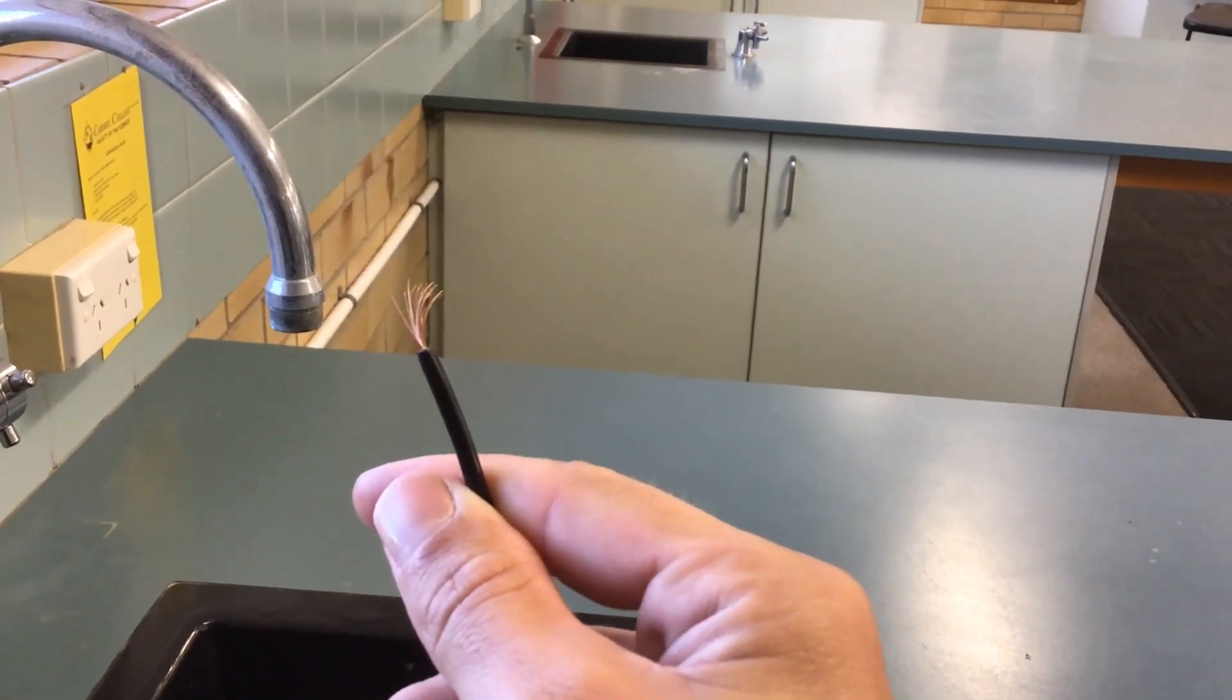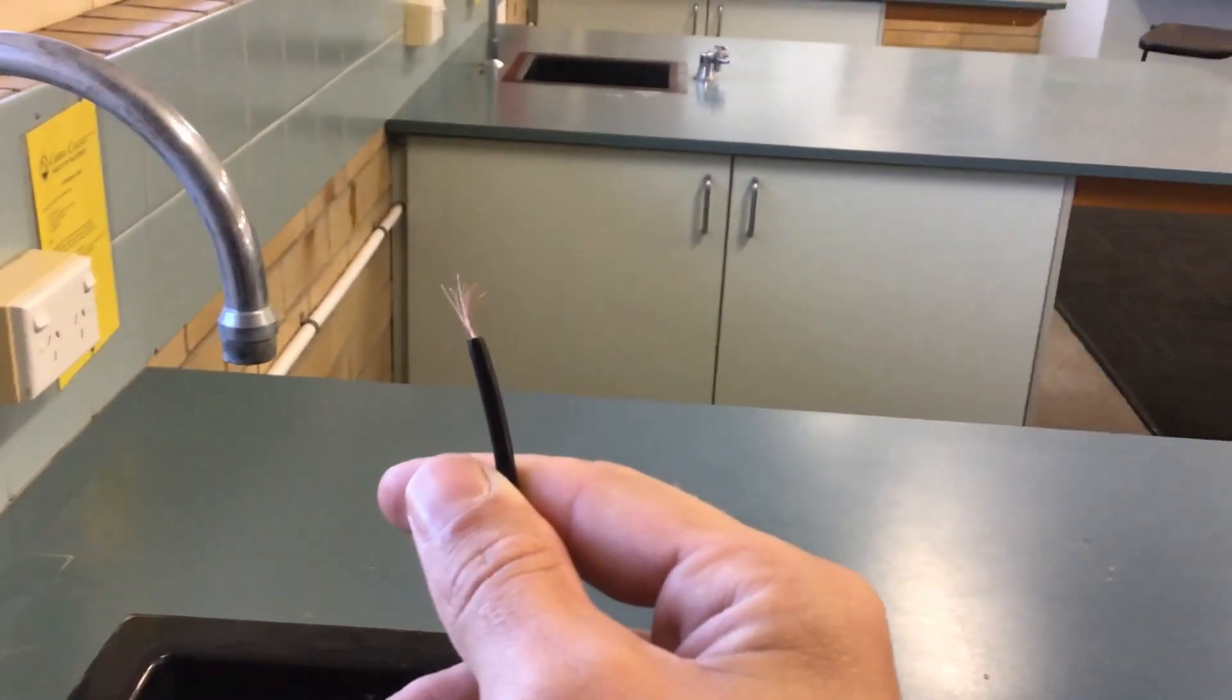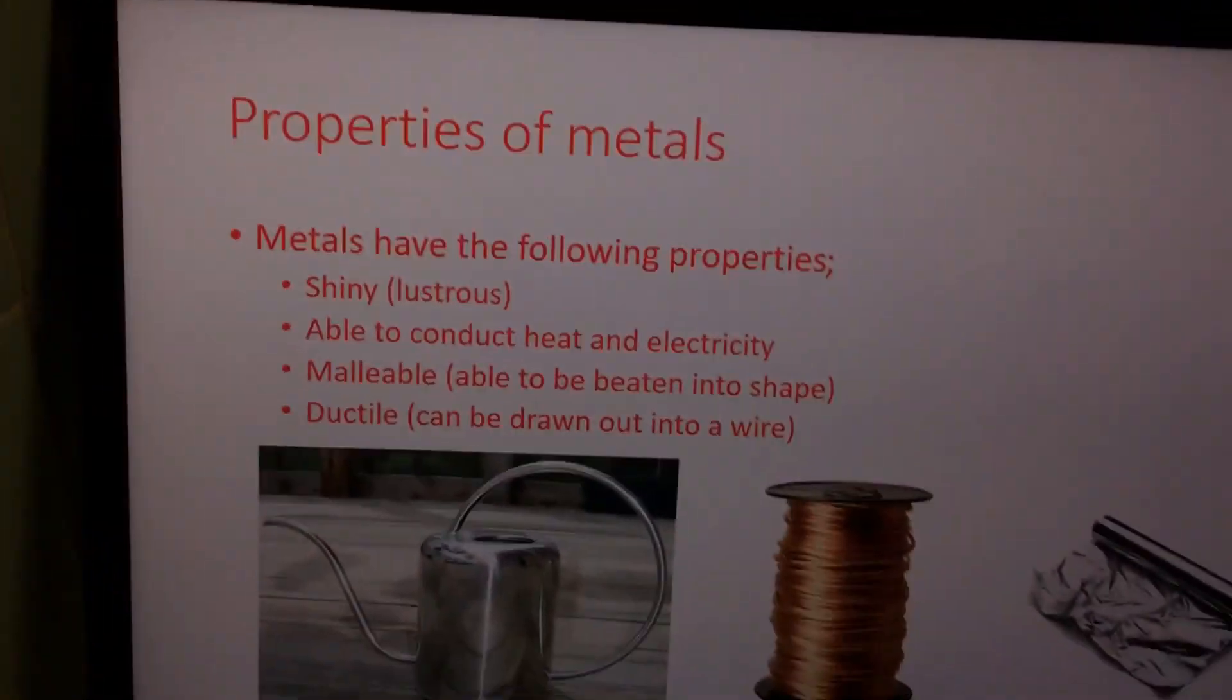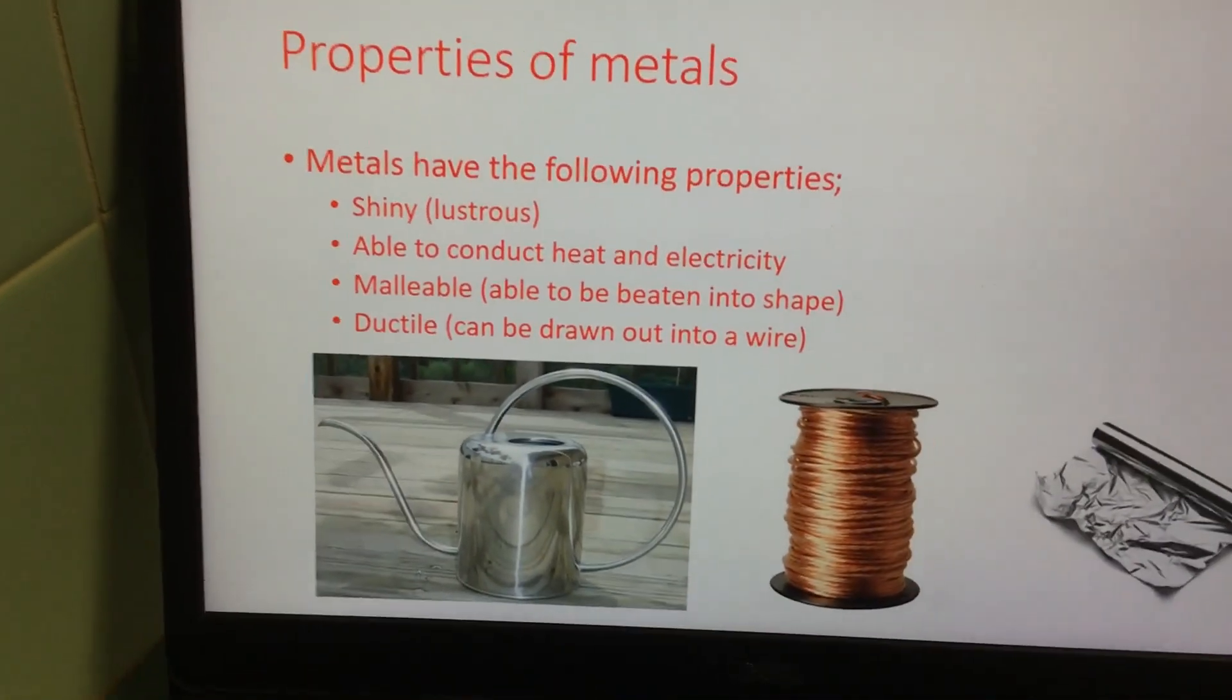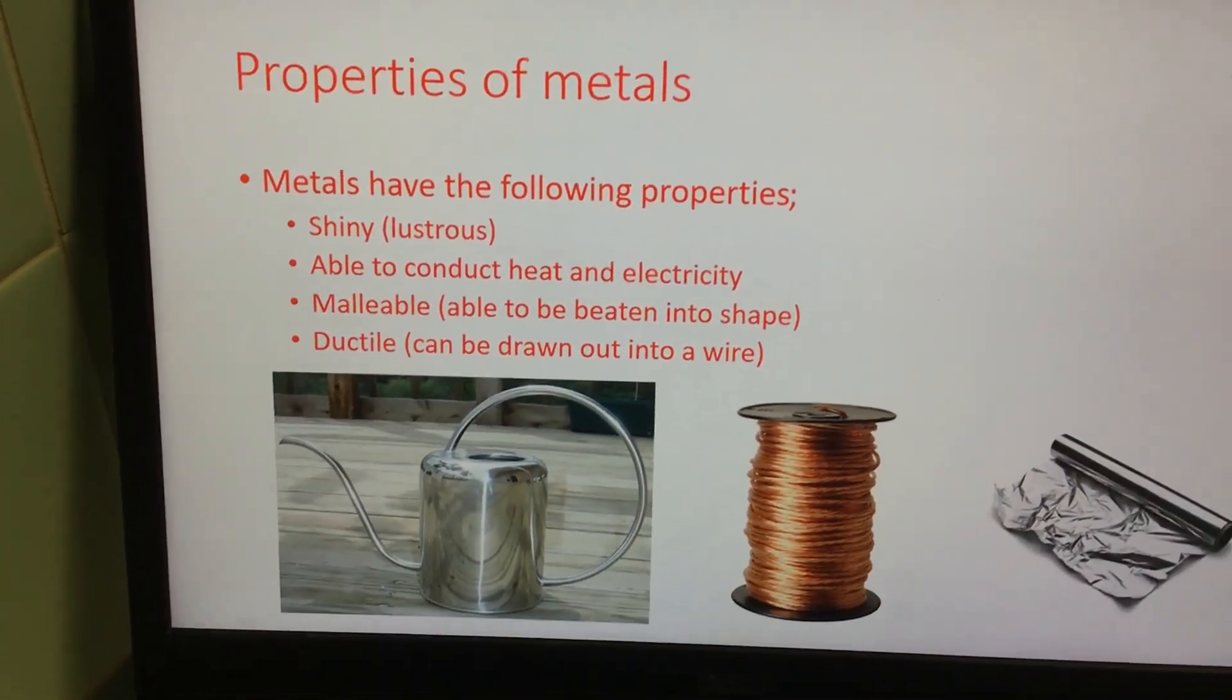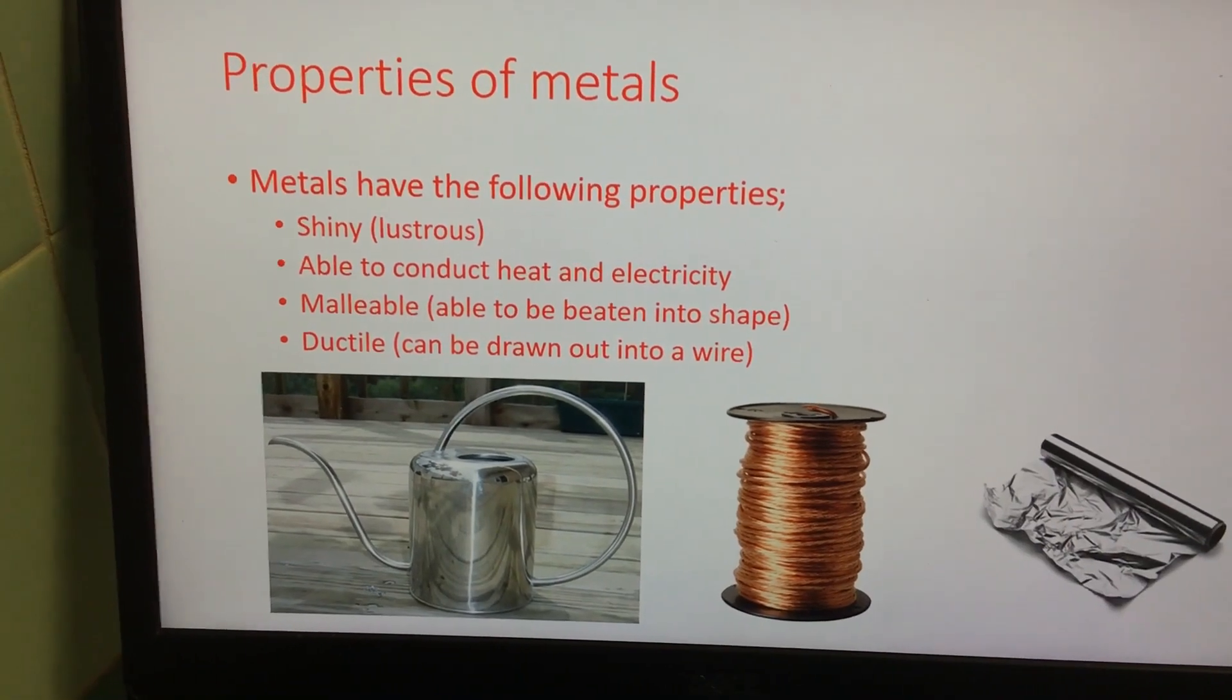And copper is also very cheap, so you can make lots of these in very long lengths. So if we go back to our properties of metals, copper is shiny, even though sometimes the surface reacts with oxygen. It is able to conduct heat and electricity. It is malleable.